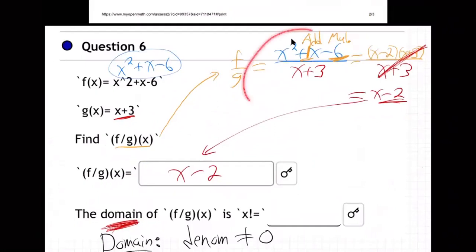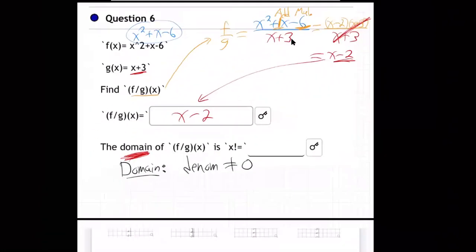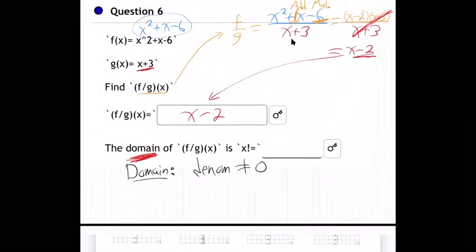So all we've got to deal with is denominator not equal to zero. Let's do it. What's the denominator? x + 3, not equal to zero. Finish solving for that. Subtract 3 from both sides. x not equal to -3.